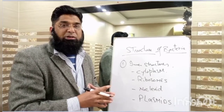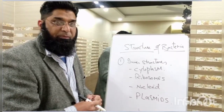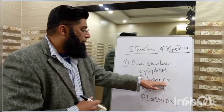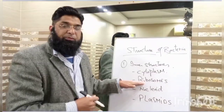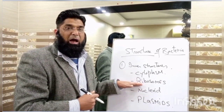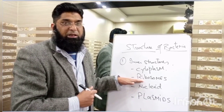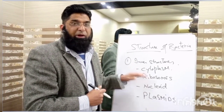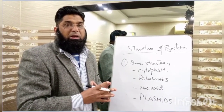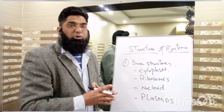Number two: ribosomes. Ribosomes are the main protein synthesis sites of the bacterial cell — they are the sites where the bacterial cell's proteins are synthesized.